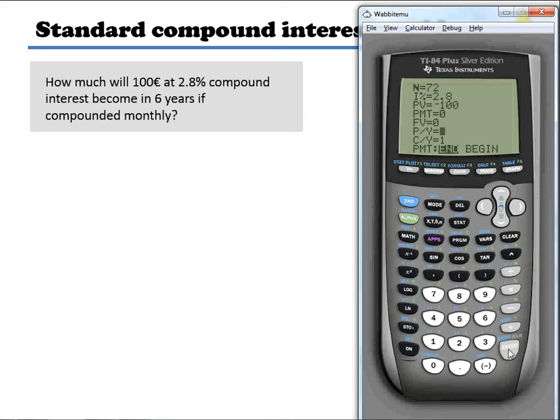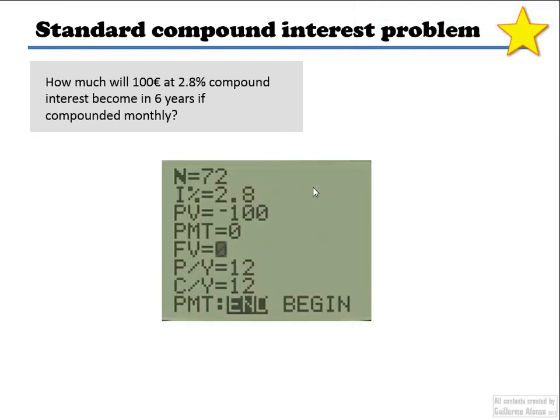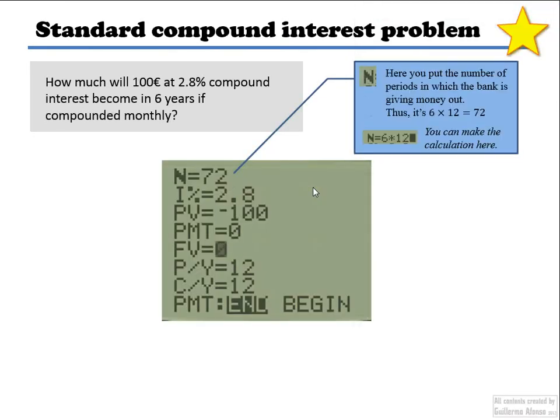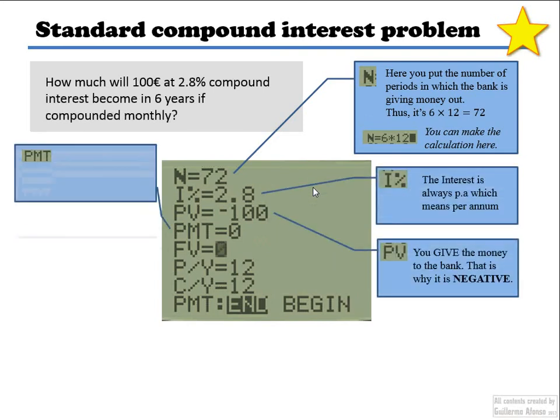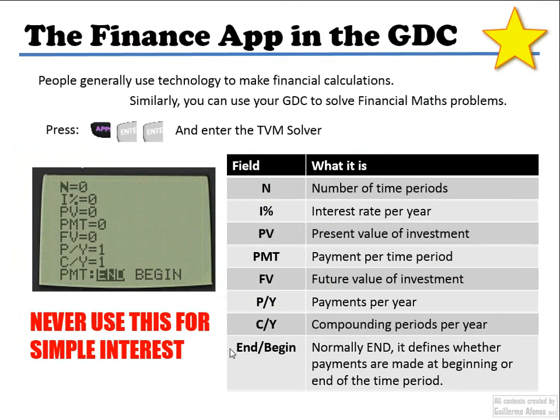Here we go. So N is the number of time periods, not necessarily the number of years. Keep that in mind. The interest however is always the interest per year. The present value, the payment per time payment, if there's any like payment made in between and so on. Important thing to keep in mind is that you should never use this for simple interest. Only for compound interest and things like loans, inflation, depreciation that we will see later on.